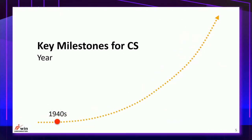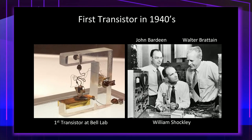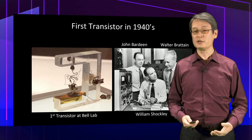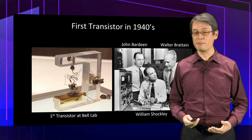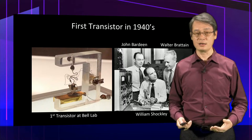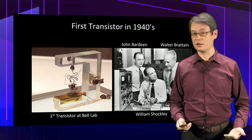I'm going to take a few minutes to give you an overview of the key milestones achieved by compound semiconductors in the past. Starting from the first transistor, which was invented in the 1940s at Bell Laboratories by three very famous scientists. The first transistor was germanium-based — not silicon, and not a compound semiconductor either.